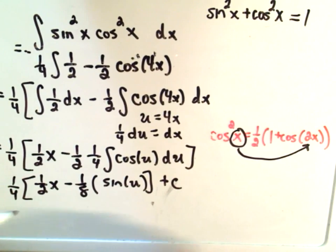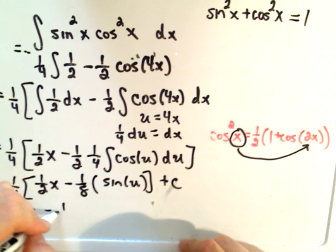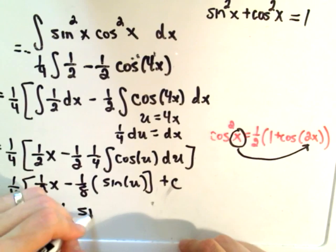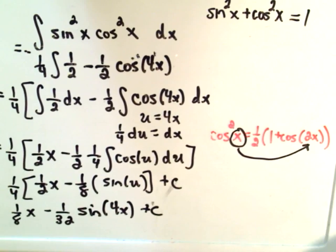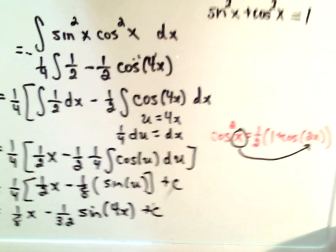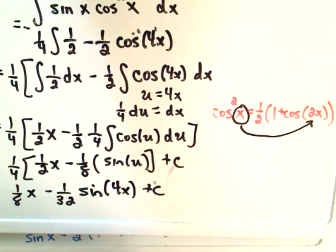We could distribute the fourth. So we have one-eighth x minus one over thirty-two sine of 4x, all of that plus c. That would be your final answer.